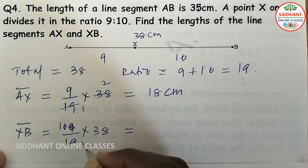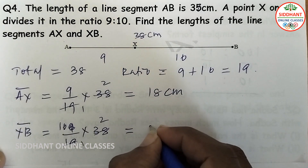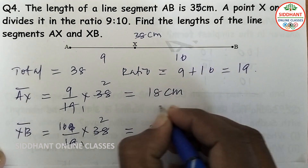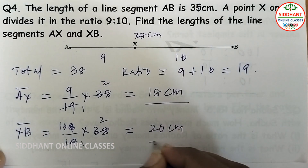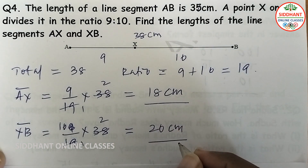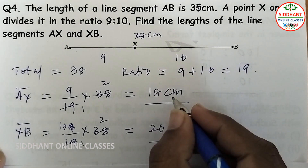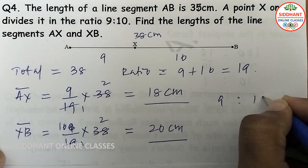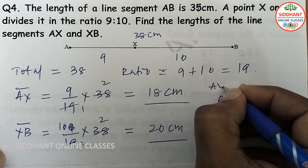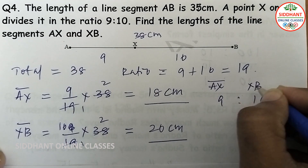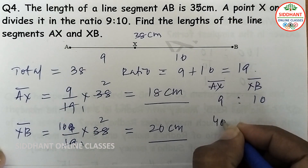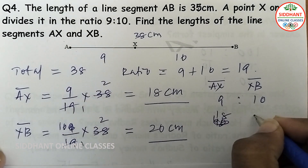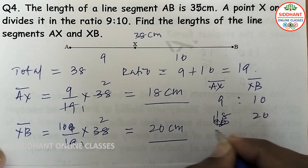So AX is 18 cm and XB is 20 cm, which are in ratio 9 is to 10. The lengths of AX and XB are 18 cm and 20 cm respectively.